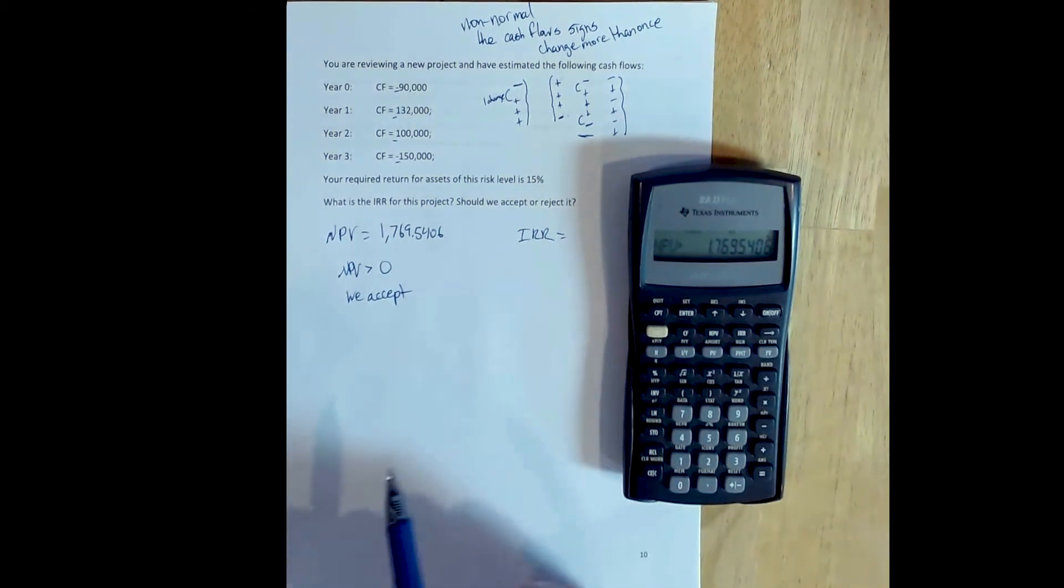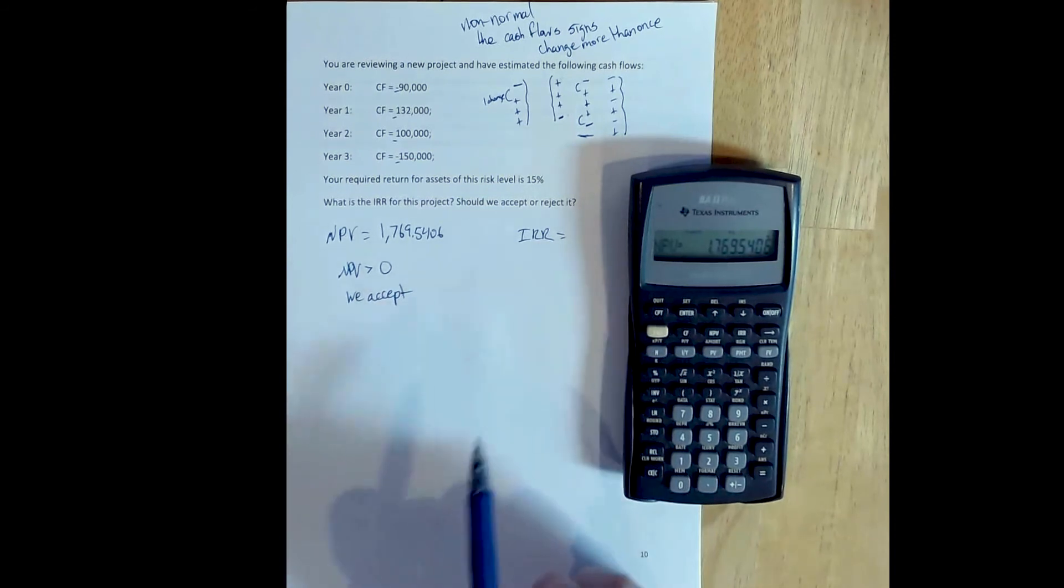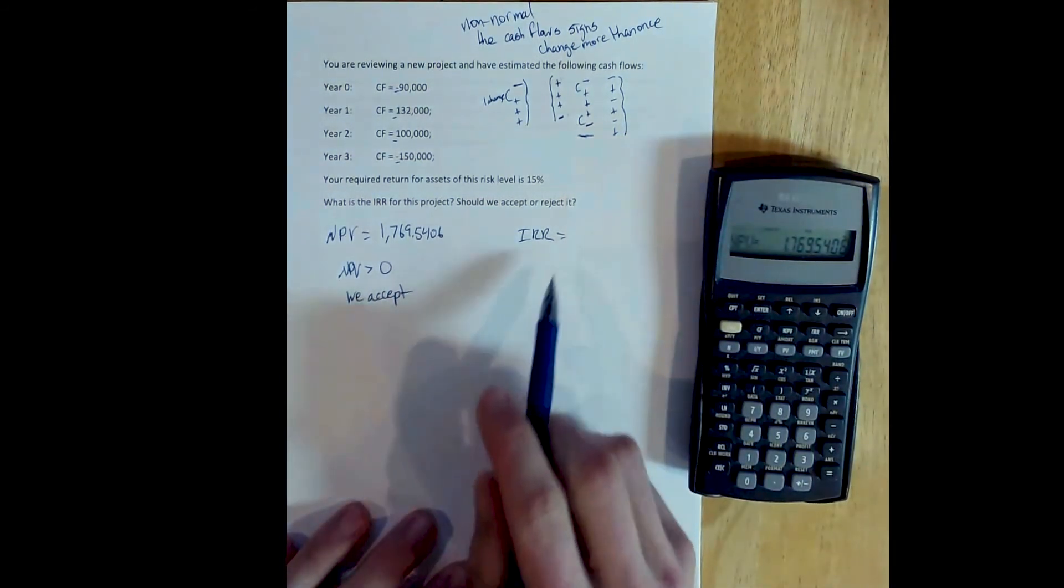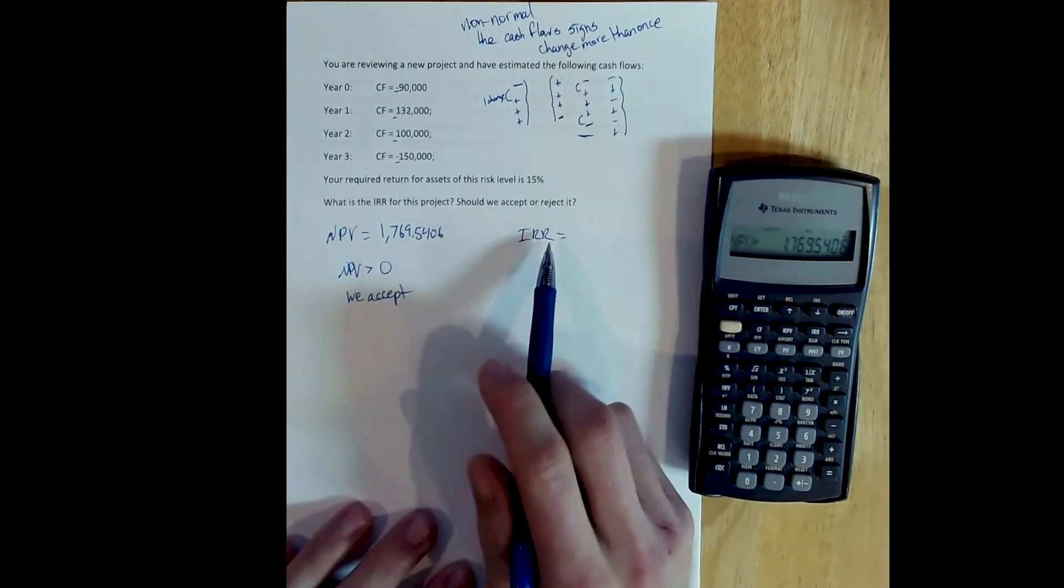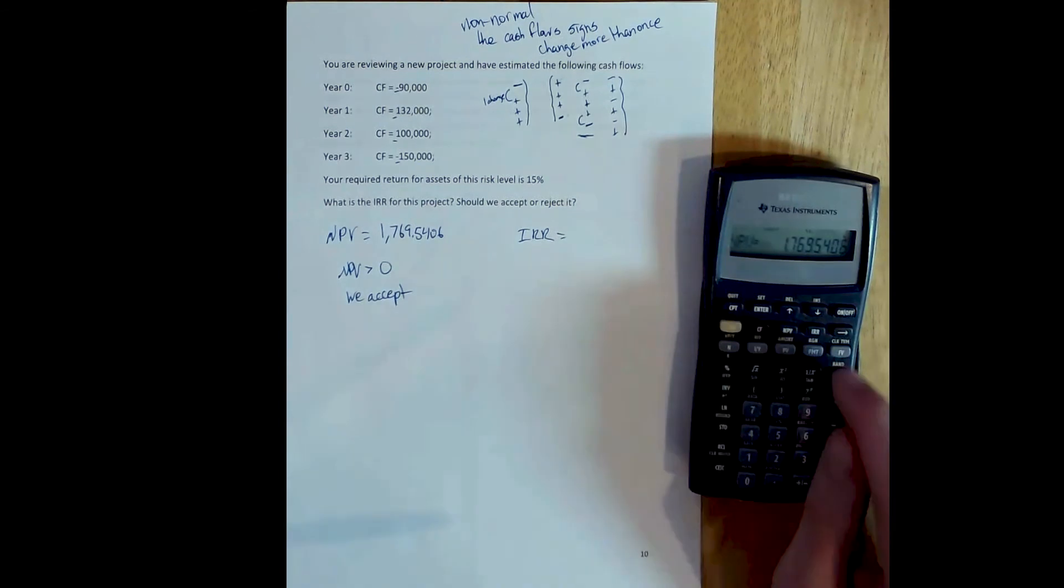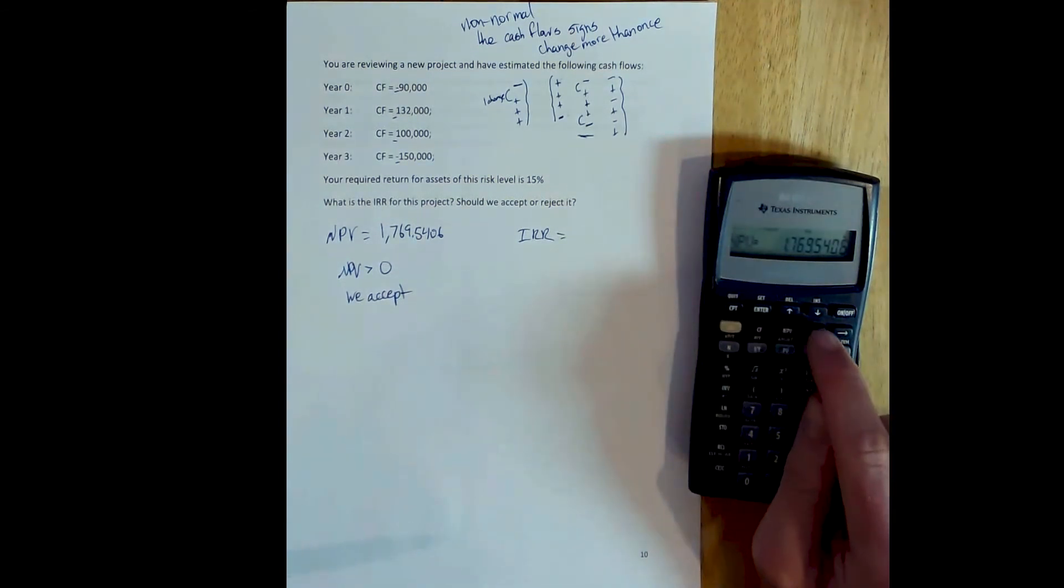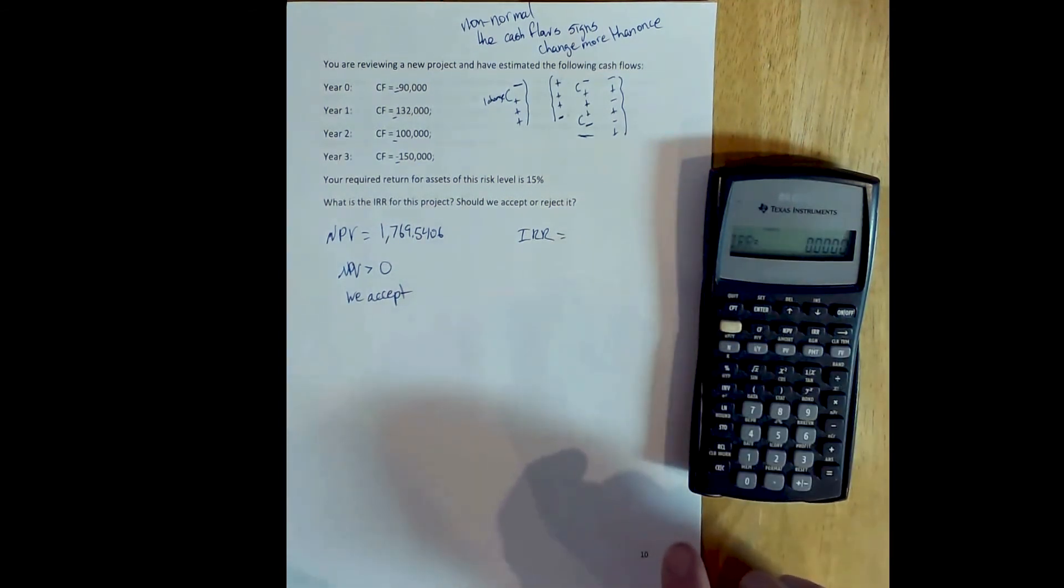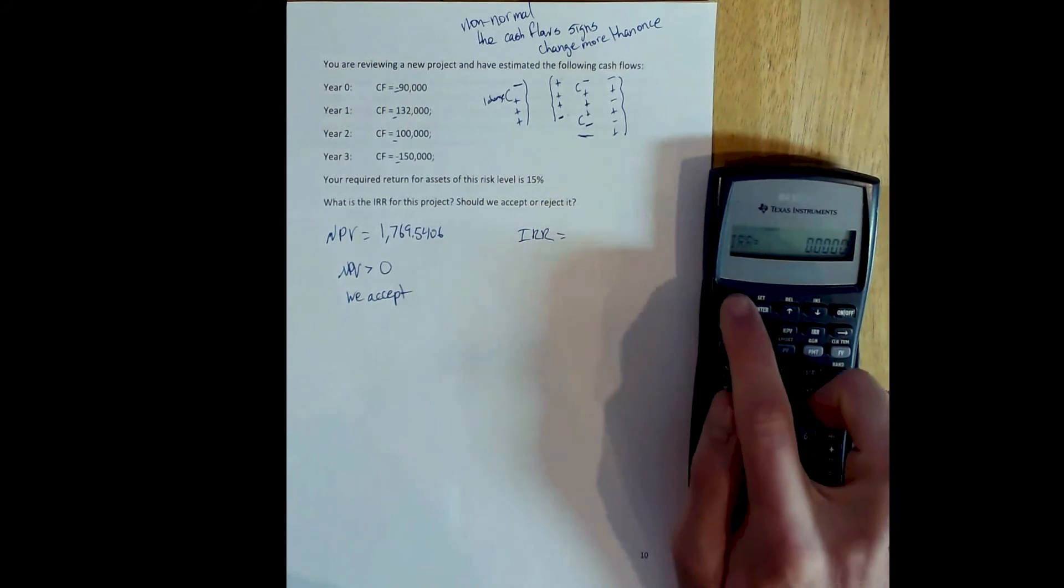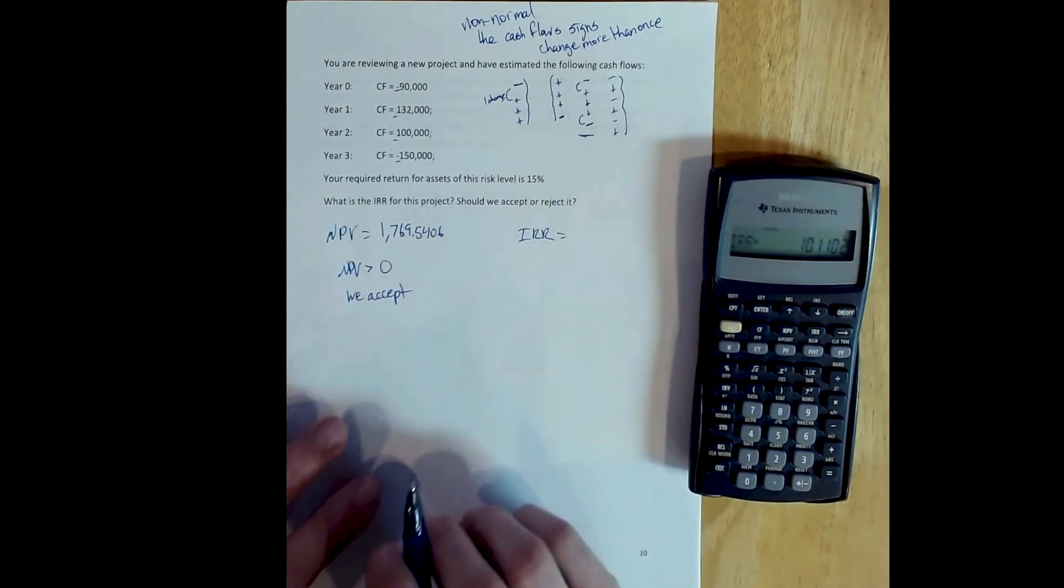Given that net present value and internal rate of return almost always agree, we should expect that when we solve for internal rate of return, we will also accept the project, meaning we should solve and find an internal rate of return that's greater than the discount rate. If we just go over and press internal rate of return, we can solve for the internal rate of return. All the cash flows are stored in the cash flow environment. We haven't changed anything here. So we can press IRR and compute, and we'll get some thinking here.